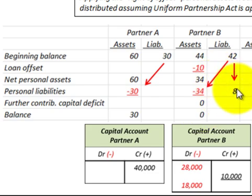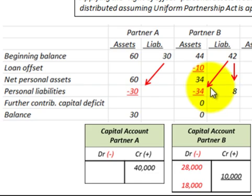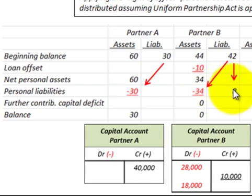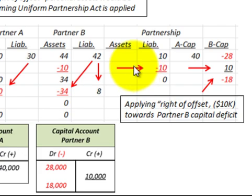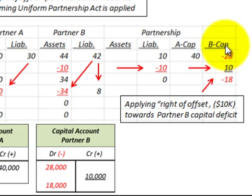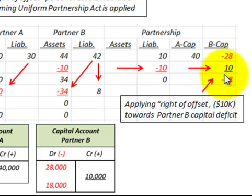They still have $8,000 remaining in liabilities. So the $42,000 was split: $34,000 going to reduce net personal assets, and $8,000 remains in liabilities. Looking at the partnership side: the loan liability was reduced by $10,000, so they owe nothing there. Partner B's capital account was at a $28,000 deficit, reduced by the $10,000 loans payable, leaving $18,000 remaining as a deficit — what they owe the partnership.